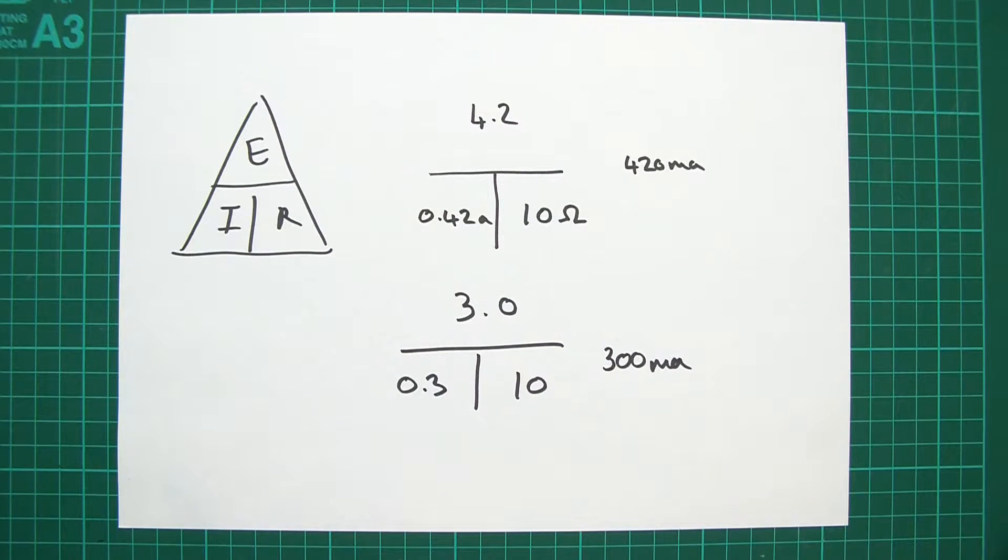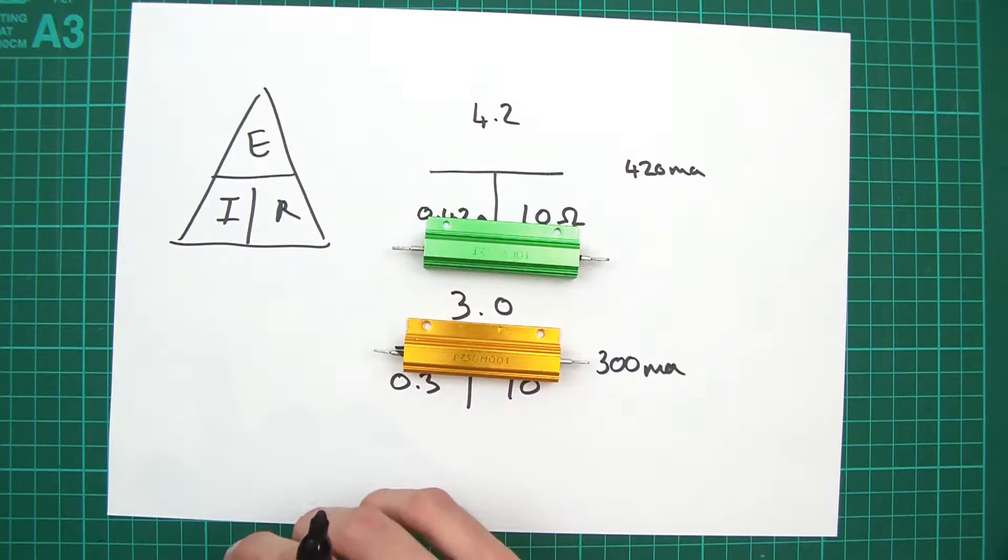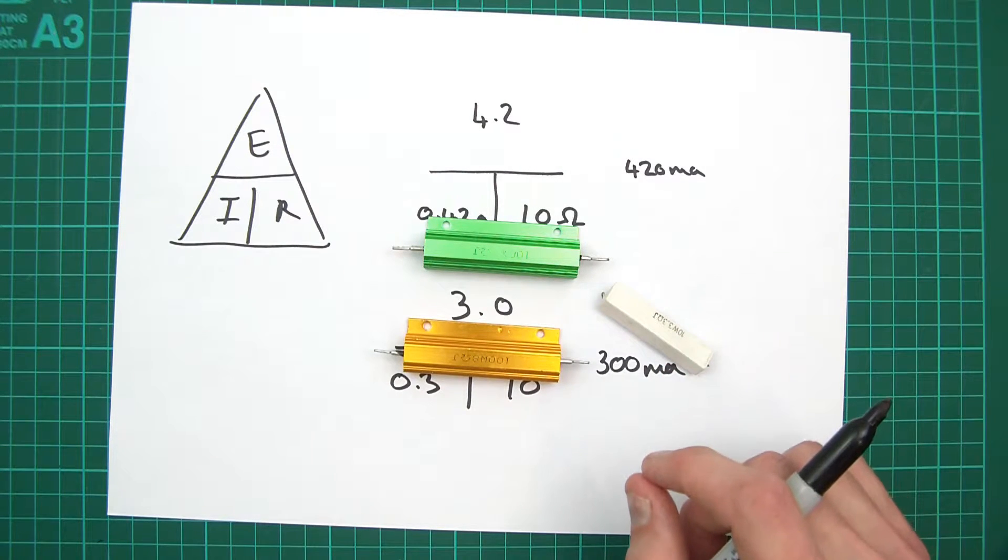So, what have I got? Let's have a quick look. I've got one of these, I've got one of these, and I've got one of these.